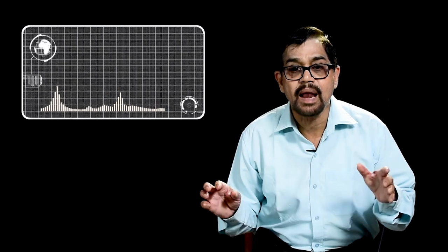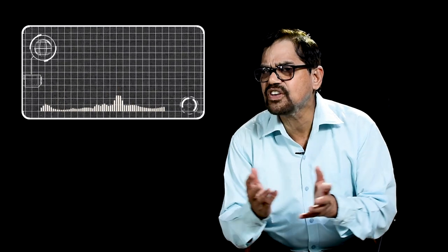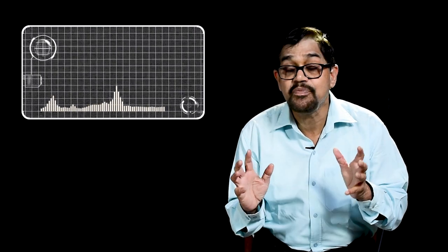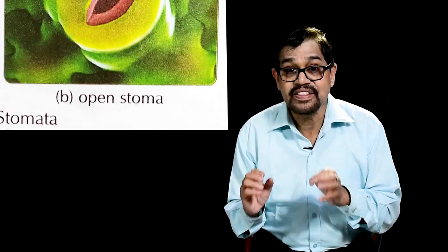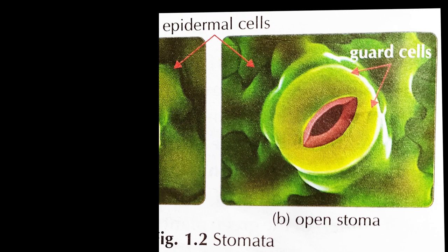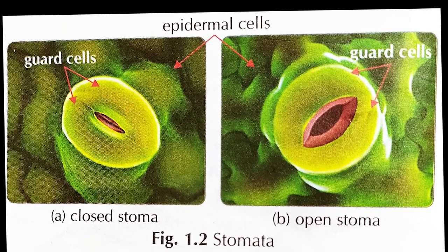Now for the carbon dioxide part: how is carbon dioxide absorbed into the plant? It is absorbed through the stomata. These stomata are small openings in the leaves, mostly on the underside. We cannot see them naturally — they are not visible to the naked eye. You have to see them under a microscope.